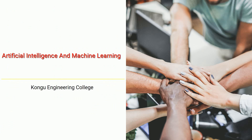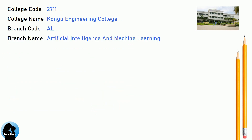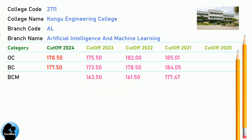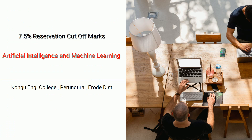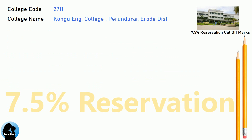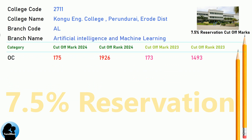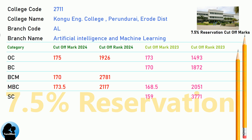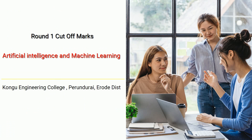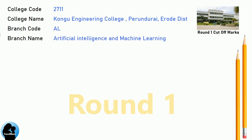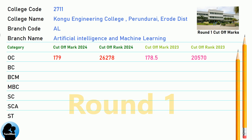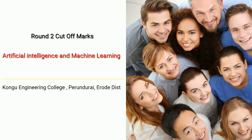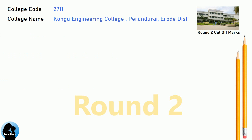DNA cutoff for Kongu Engineering College in Artificial Intelligence and Machine Learning. DNA 7.5 reservation cutoff, Round 1 cutoff, and Round 2 cutoff for Kongu Engineering College in Artificial Intelligence and Machine Learning.